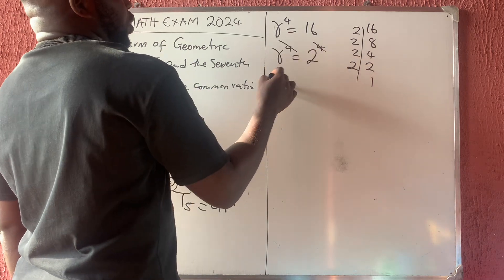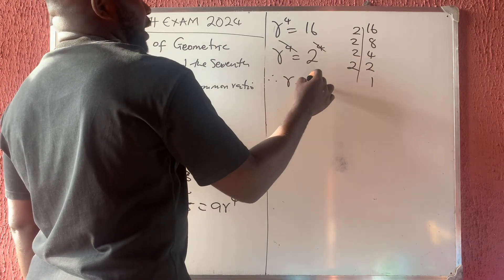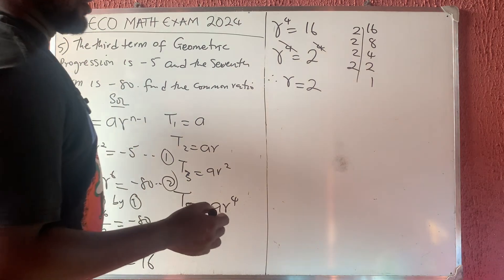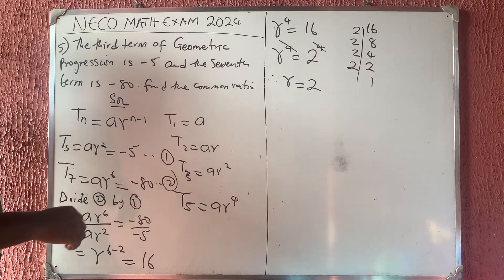So if you look at this, 4 will take care of 4. Automatically, the ratio they say we should find is now 2. So the answer to this question is 2.